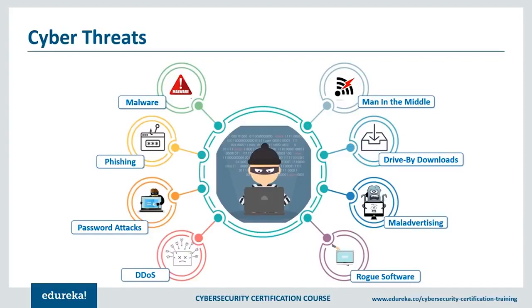Next up, we have drive-by downloads: through malware on a legitimate website, a program is downloaded to a user's system just by visiting the site, without requiring any action by the user. Next up is malvertising, a way to compromise your computer with malicious code downloaded to your system when you click on an affected ad. Lastly, we have rogue software — malware masquerading as legitimate and necessary security software that will keep your system safe.